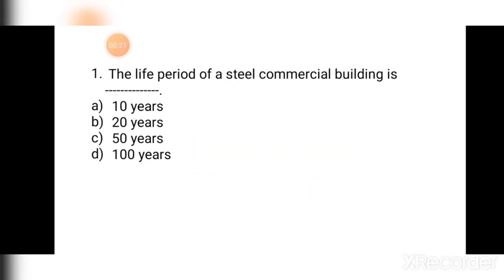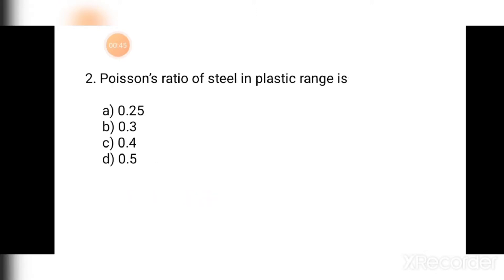Question number one: The life period of a steel commercial building is — (a) 10 years, (b) 20 years, (c) 50 years, (d) 100 years. Generally we design buildings for 50 years, hence the correct answer is (c) 50 years.